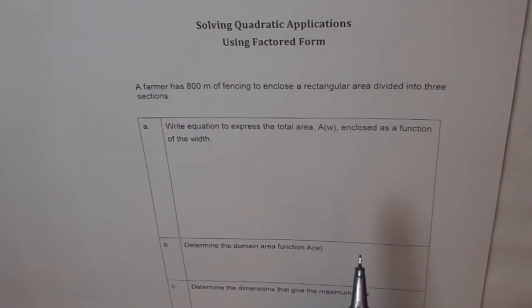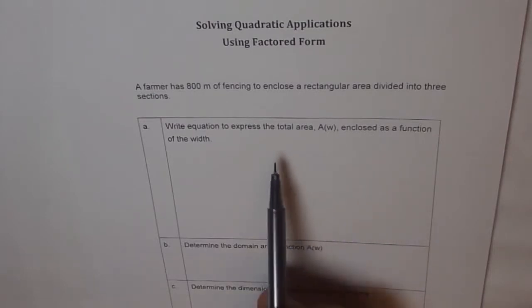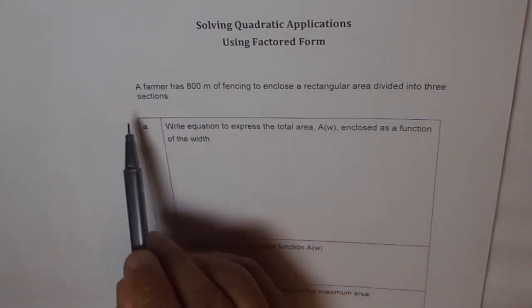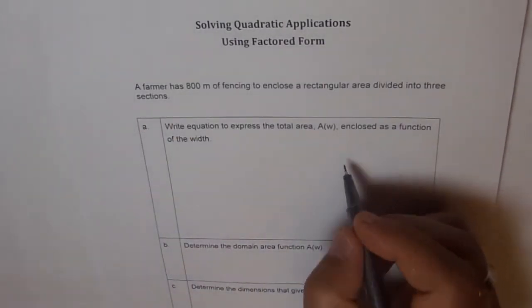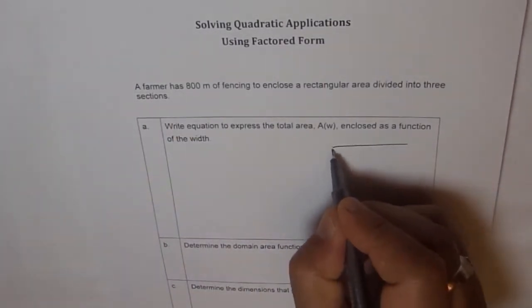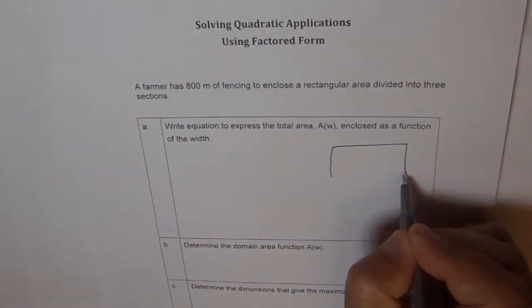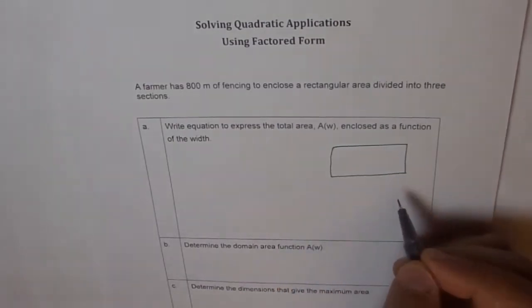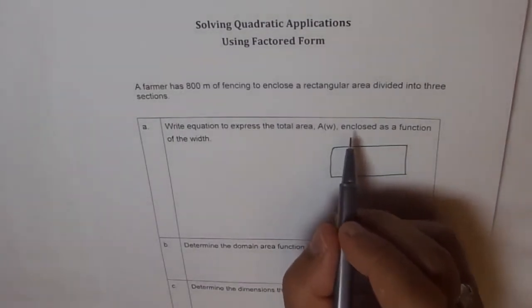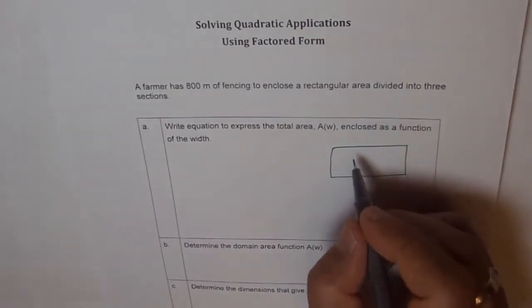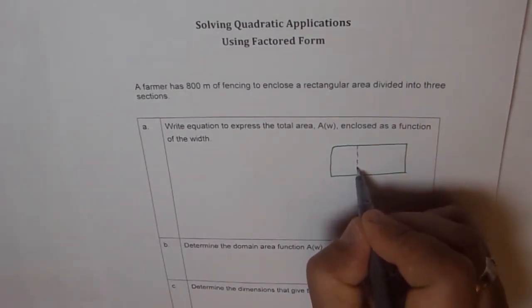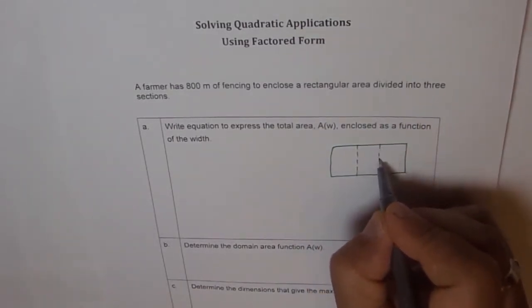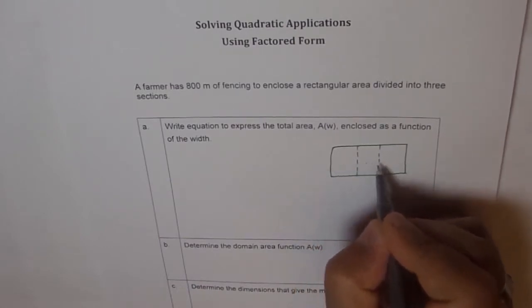Let's start with the first part, finding total area of this fence. We have a fence here. Let's draw a sketch and divide it into three sections. That means let's say this is one division and this is another division. So these are our three sections.